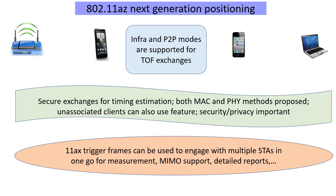Wi-Fi is working on 802.11az, called the Next Generation Positioning initiative. It's not yet fully published — it might be published in 2022 going by the timelines on the standardization web page. So what are the enhancements at a broad level?